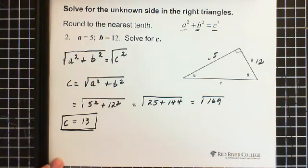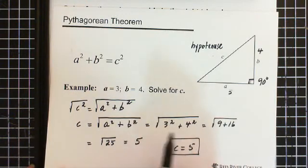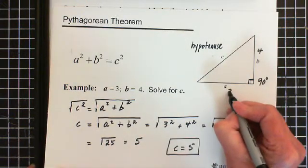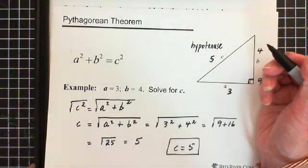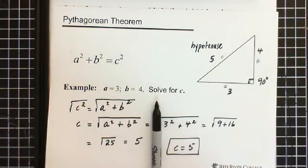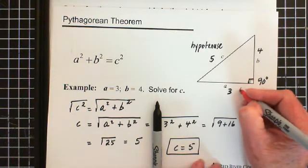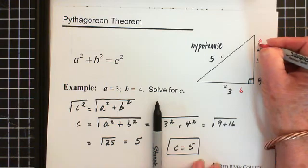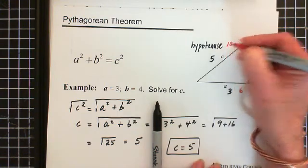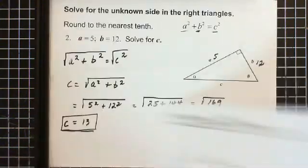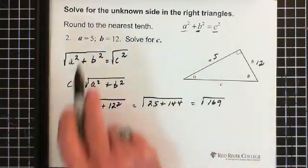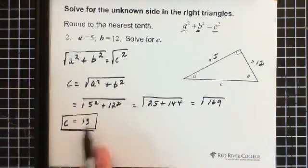The first triangle we did, this one here, is a 3, 4, 5 triangle. So if you have the relationships of 3, 4, the hypotenuse will always be a 5. If our relationships happen to be, this happened to be a 6, and this was an 8, then this would have to be a 10. 3, 4, 5 triangle. And what we just solved for is the 5, 12, 13 triangle.